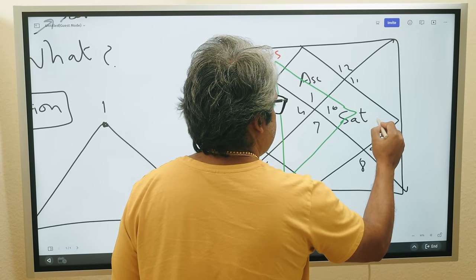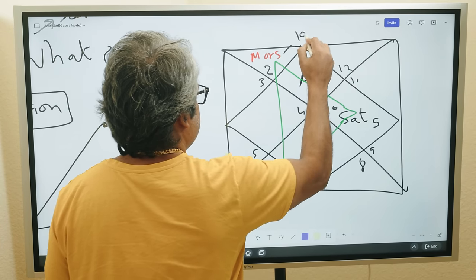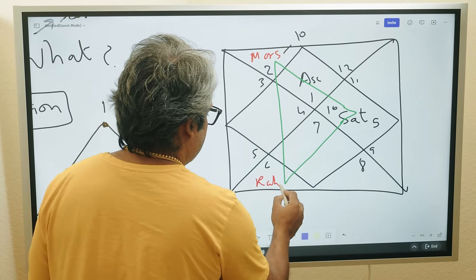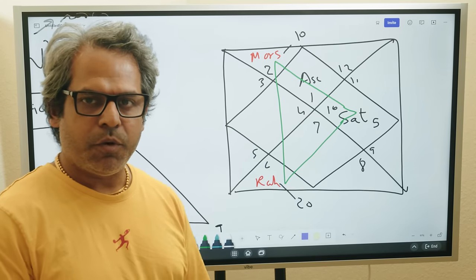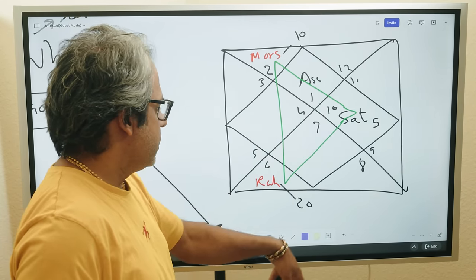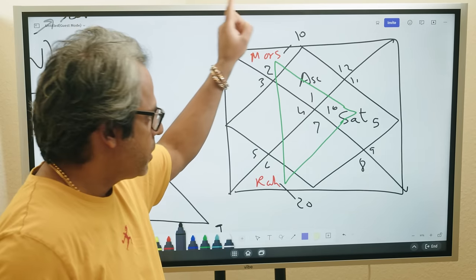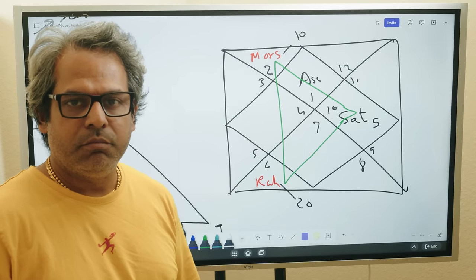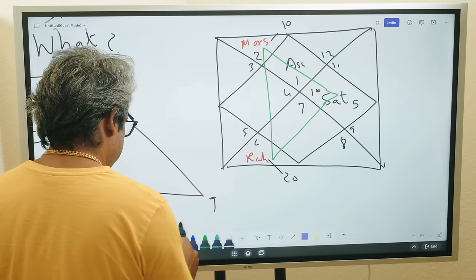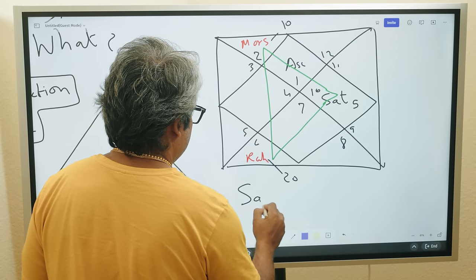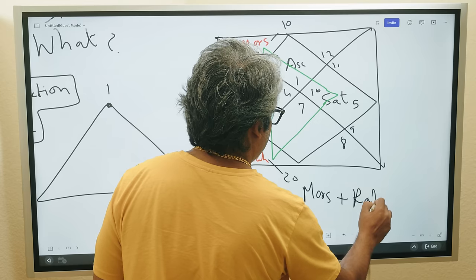So now I know the very first thing that I would do is in my head I would make this combination, but also for that I will see which degree these planets are in. Saturn let's say is at 5 degrees, Mars is at 10 degrees, Rahu is at 20 degrees. So now in my head I'm going to make this combination: Saturn plus Mars plus Rahu.